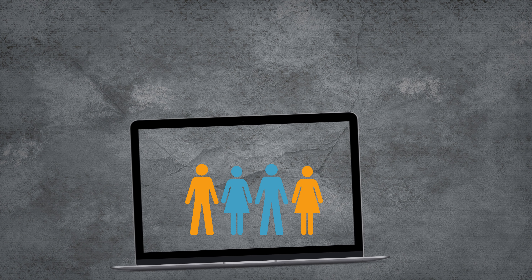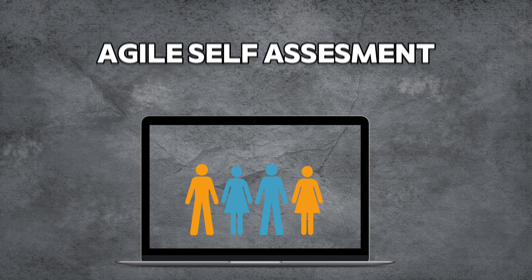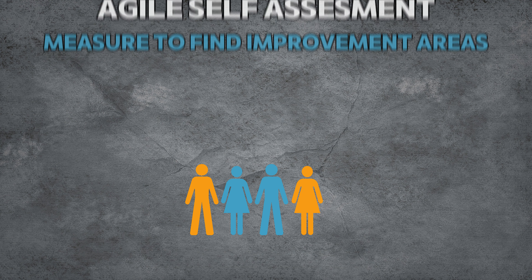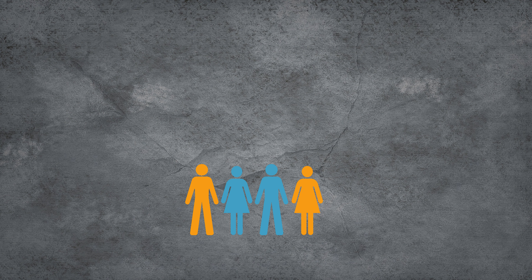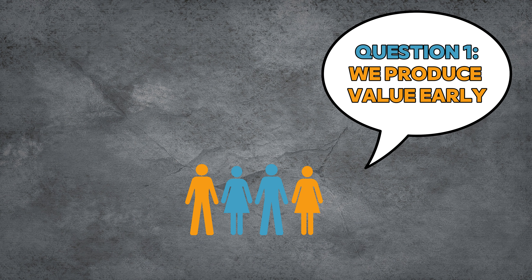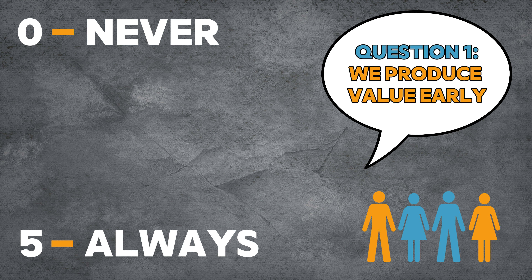Gather your team, offline or online, and explain the background and the purpose of the exercise. Then simply ask them the first question. The team will answer the question with a number from 0 to 5, where 0 is never and 5 is always.